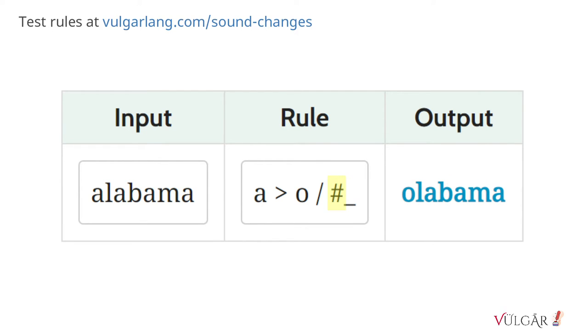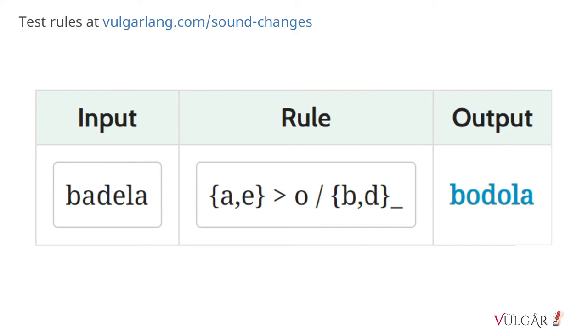This hash symbol represents a word boundary. This changes A to O at the beginning of a word. Curly brackets create a set. This means change A or E to O when they come after a B or D. Don't forget to separate the phonemes in the set with commas.